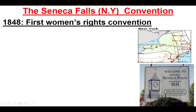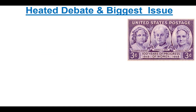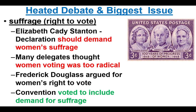Seneca Falls is centered in the heart of the burned-over district of New York, where we've talked a lot about religion, reform, and various reform groups. At this meeting — mostly women with some men — they draw up a document called the Declaration of Sentiments and Resolutions. It calls for an end to laws that discriminate against women in religion, politics, and economics, and that women should be able to hold men's jobs. Within the meeting there was a big debate about how far they should go — some demands seemed too radical even for many women.